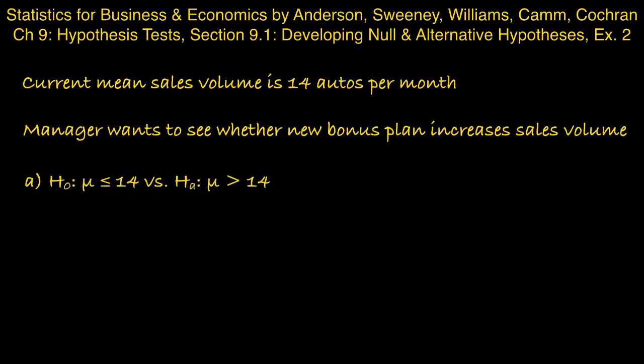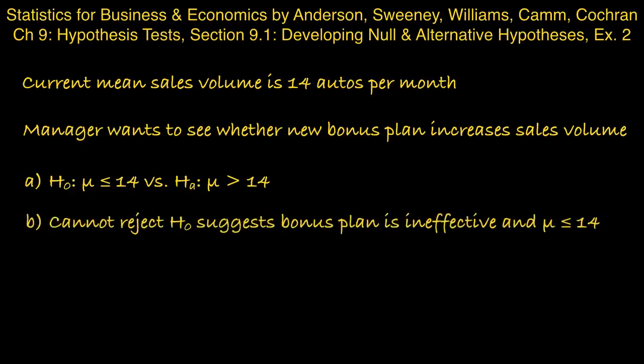Part B: comment on the conclusion when the null hypothesis cannot be rejected. If we cannot reject the null hypothesis, it is plausible that μ is less than or equal to 14 under the new bonus plan — in other words, the bonus plan doesn't appear to be very effective.